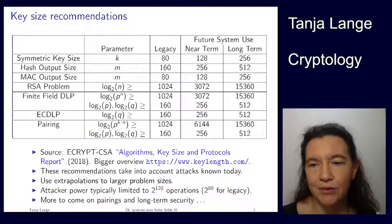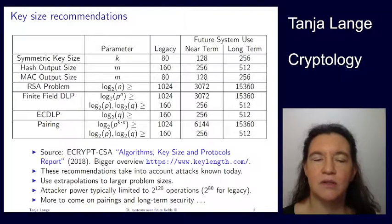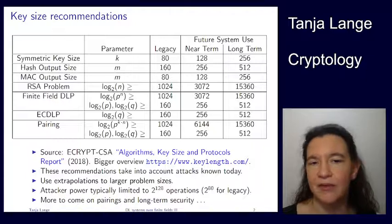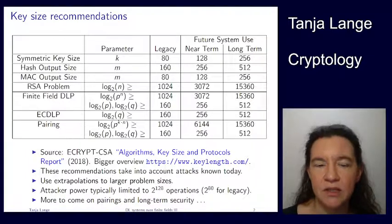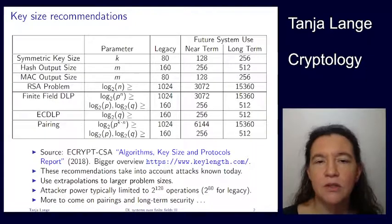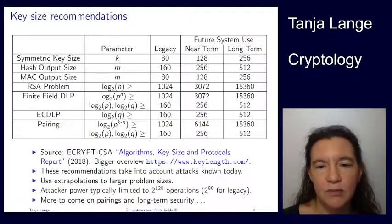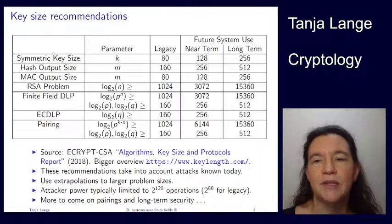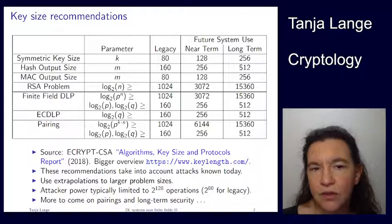What sizes can we recommend for using these systems? We always have these parameters running around — for instance, the symmetric key size, how large the key size should be, or for finite field discrete log systems, how large does a prime have to be, how large does the subgroup have to be? What I'm showing you here is the recommendation from the ECRYPT CSA algorithms, key sizes and protocols report from 2018. You can also go to keylink.com where you get an interactive format where you can select different sources.